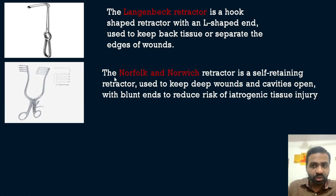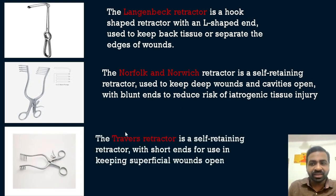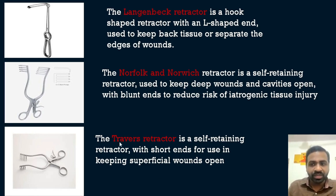The Norfolk and Norwich retractor is a self-retaining retractor used to keep deep wounds and cavities open. It has a very lengthy and blunt end to reduce the risk of iatrogenic tissue injury. The traverse retractor is similar but its tip is very short, making it suitable for keeping superficial wounds open. Both have blunt edges to prevent iatrogenic injuries.